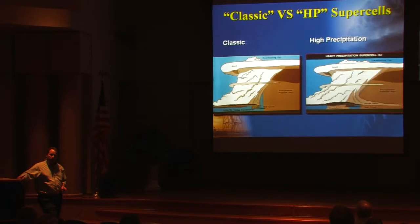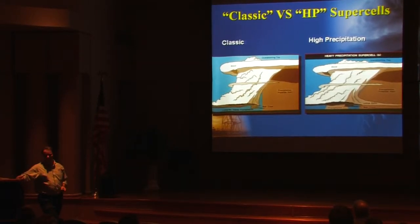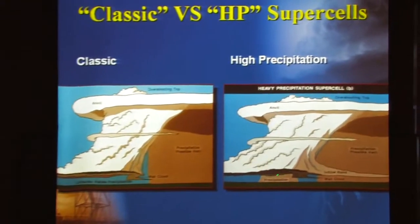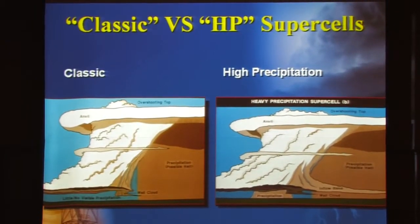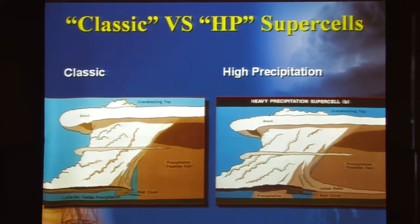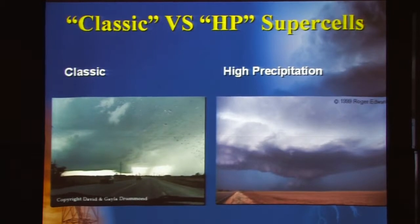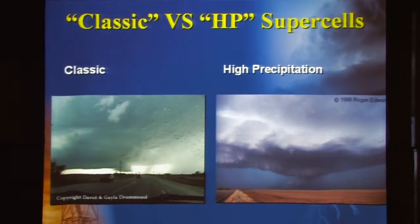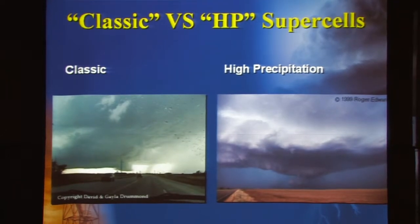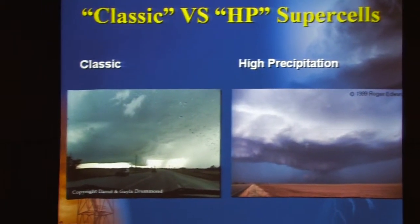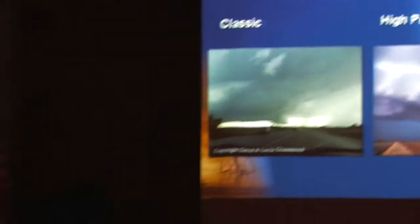From an idealized diagram perspective — classic on the left, heavy precipitation on the right — you can see this is a simple difference. Rain wrapping on the rear flank downdraft side of the storm. In the sky, there are your different looks: bright sky behind a classic supercell, rainfall behind in a high-precipitation supercell. But the use of that radar data, tying with what you're seeing in the sky, really helps you a lot.